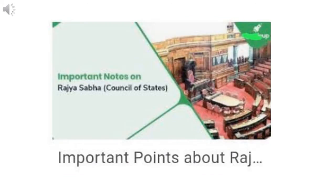The members of the Rajya Sabha are indirectly elected. The total members of the Rajya Sabha is 250. Of them, 238 members are elected from the constituent states or union territories. All these constituent states do not get equal representation in the Rajya Sabha. The representation is proportionate to the total population of each of the states. The remaining 12 members are appointed by the President. These members are usually experienced and distinguished personalities from the fields of literature, arts, science, sports, and social work.